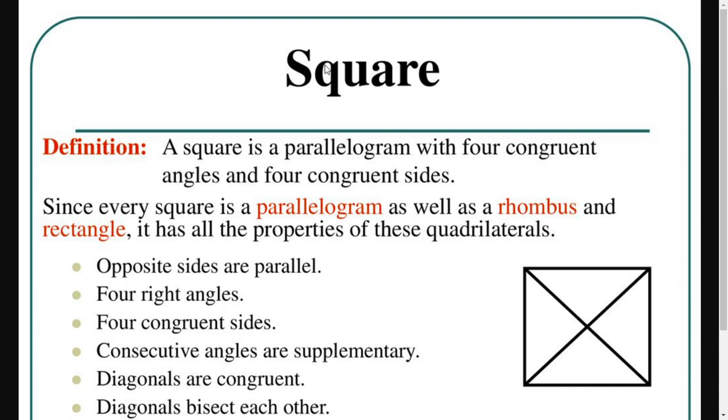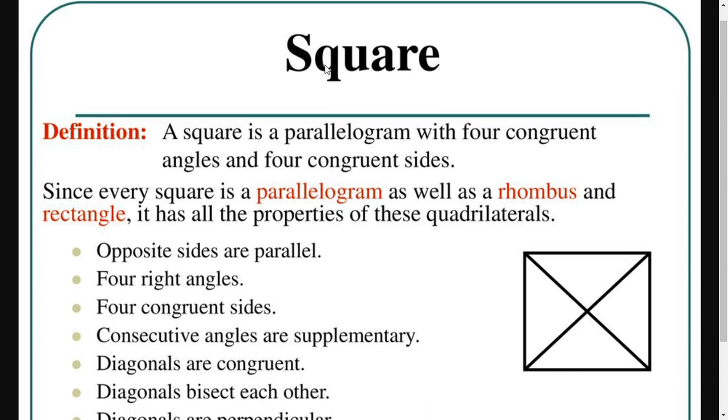Since every square is a parallelogram as well as a rhombus and rectangle, it has all the properties of these quadrilaterals.